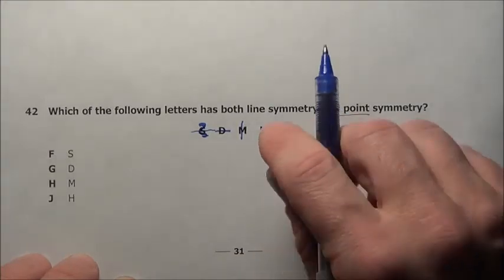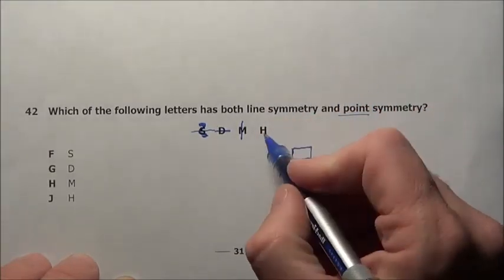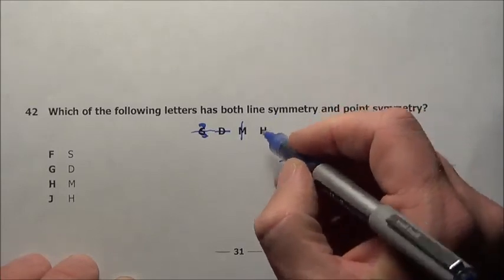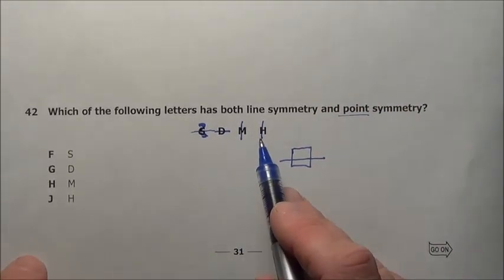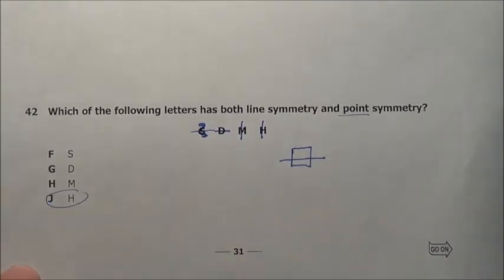Looks like it's going to be H. Well let's see, if I take H, you can see if you spin it 180 degrees it lands right back like it is and it also has a vertical line, that was poorly done, a vertical line of symmetry right down the center. So the answer is J, H.